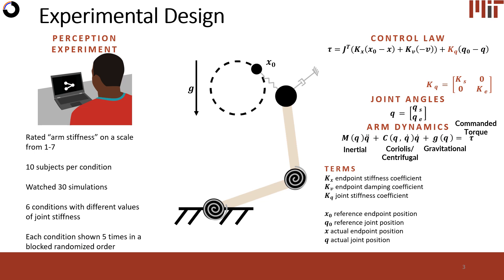Here we see this complex control law, but it is quite simple. We have two impedances acting as separate attractors. The first is pulling the input of the arm about a circle using a spring-damper connection, shown by this part of the equation. The second is a joint-space attractor pulling the arm to a nominal configuration. The KQ term is what we modulate in our simulations — essentially, when we ask subjects to rate the arm stiffness, we are asking them to tease out differences in this KQ term.